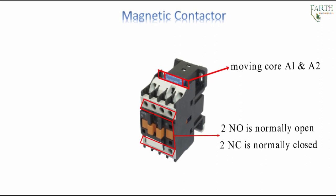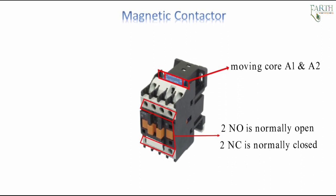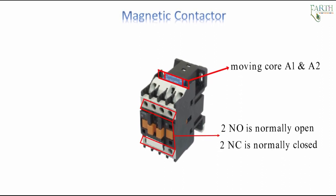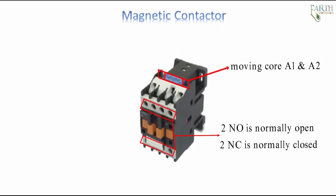When it switches a large amount of electrical power through its contacts, it is designated by the special name 'contactor.' Contactors typically have multiple contacts, and those contacts are usually, but not always, normally open, so that power to the load is shut off when the coil is de-energized.